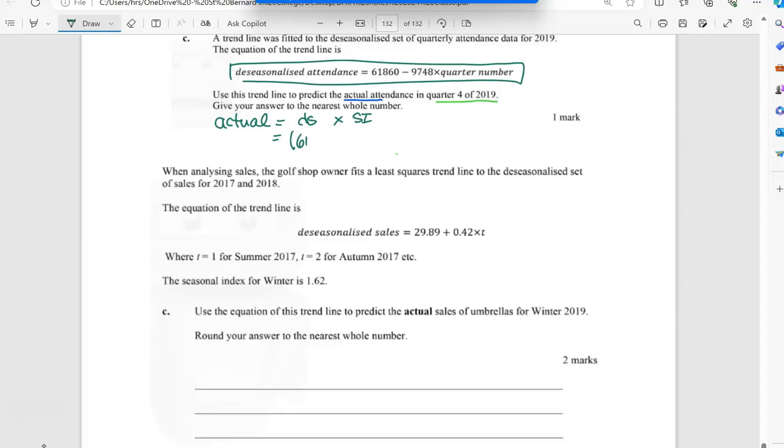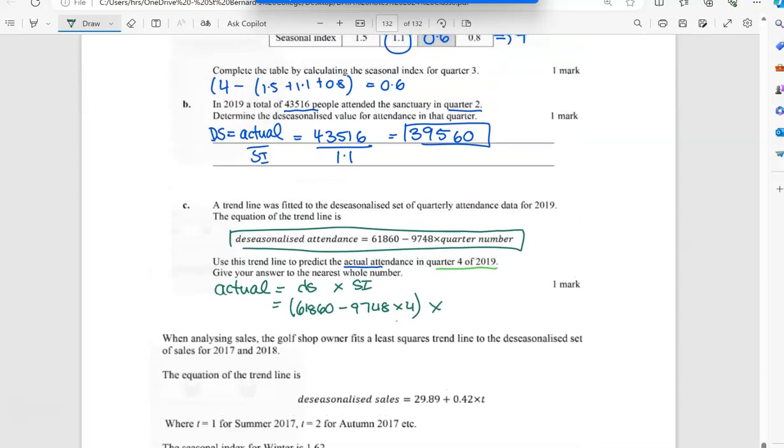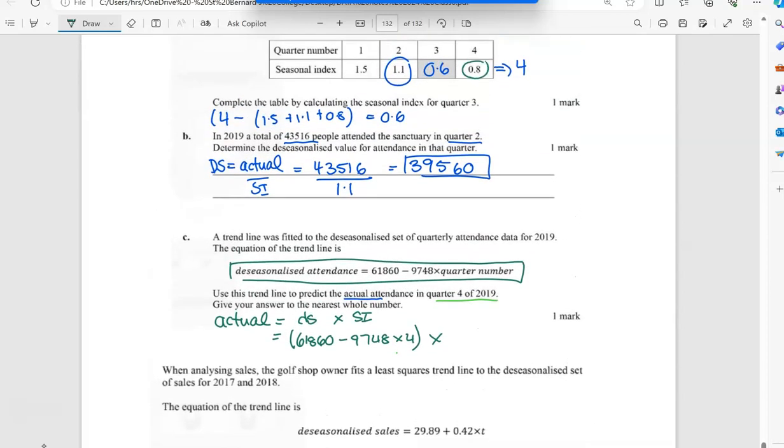Times the seasonal index, which for quarter four if I look up here was 0.8, and I end up with 18,294.